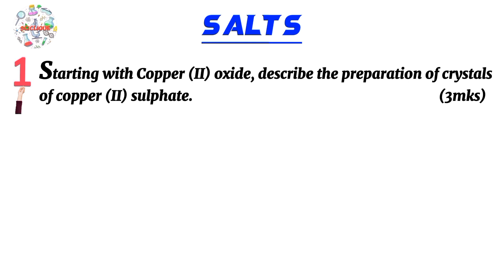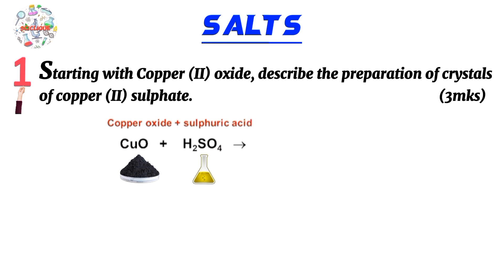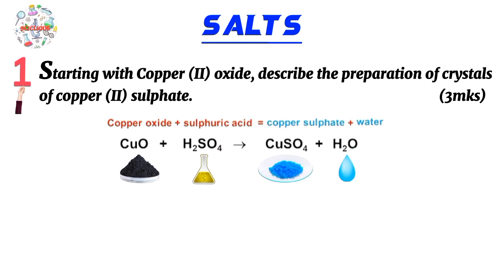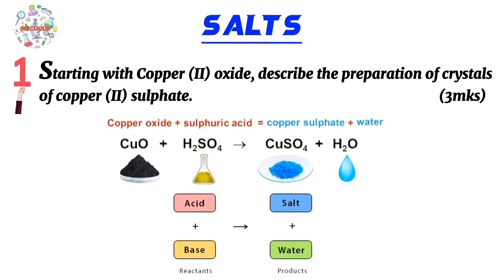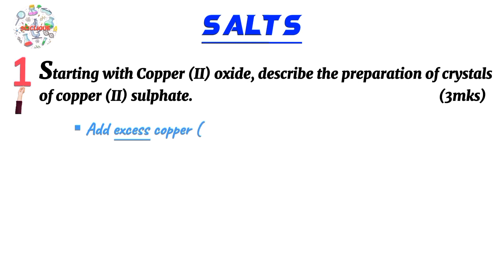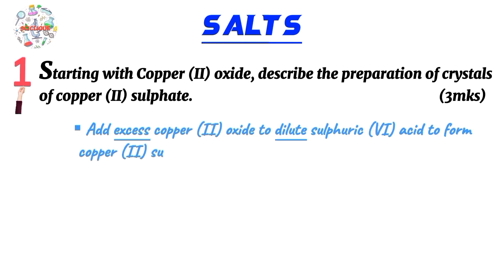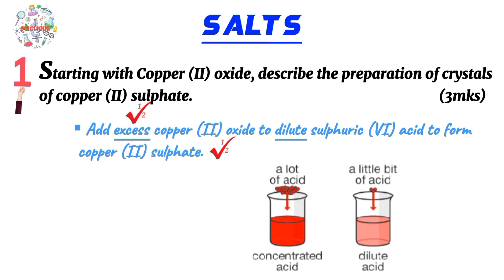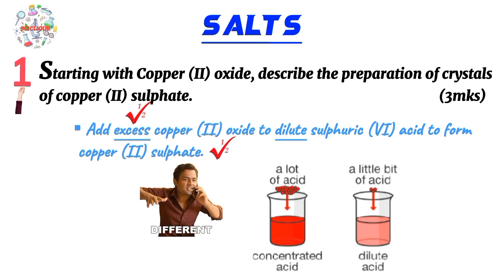To prepare copper(II) sulfate, we are going to react copper(II) oxide with the respective acid — in this case, sulfuric acid. This gives us copper(II) sulfate plus water. This is a neutralization reaction, where a base reacts with an acid to form a salt plus water. In this case, the base is copper(II) oxide and the acid is sulfuric acid. So step one: add excess copper(II) oxide to dilute sulfuric acid to form copper(II) sulfate. You must include the term 'dilute,' because the properties of dilute sulfuric acid are very different from those of concentrated sulfuric acid.